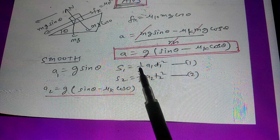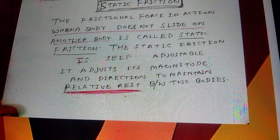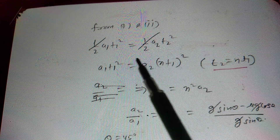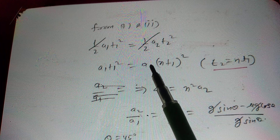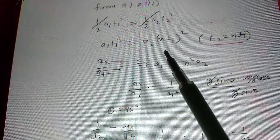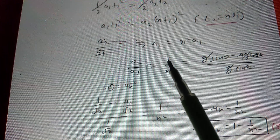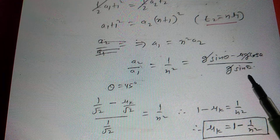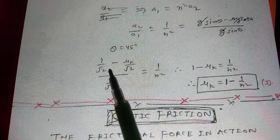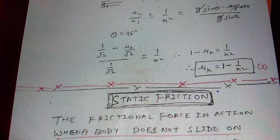From S1 = ½a1·t1² and S2 = ½a2·t2², since distances are equal: a1·t1² = a2·t2². Substituting t2 = n·t1 gives a2/a1 = 1/n². Therefore g(sin θ − μk·cos θ)/(g·sin θ) = 1/n². With θ = 45°, sin θ = cos θ = 1/√2, solving gives μk = 1 − 1/n². The answer is option three.